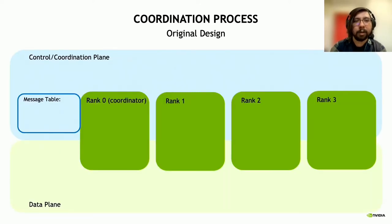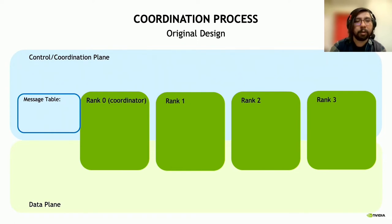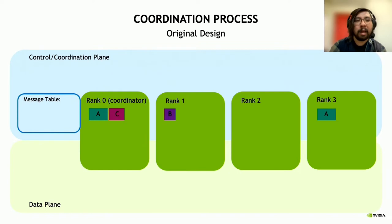It's useful to have a visual diagram of how the Horovod coordination process works, especially because this motivates the improvements we'll share later. In this diagram, I have four workers—rank zero through rank three—shown as green squares. The upper blue rectangle shows control plane operations, and the green rectangle below shows data plane operations. Rank zero, labeled the coordinator, also has a message table. At a particular Horovod cycle, some workers have tensors that need to be all-reduced. In this case, rank zero has tensors A and C, rank one has tensor B, and rank three has tensor A—tensors that the framework has determined need to be summed across all workers.